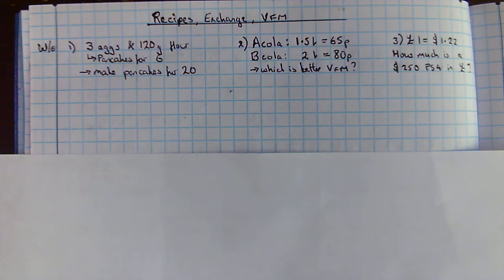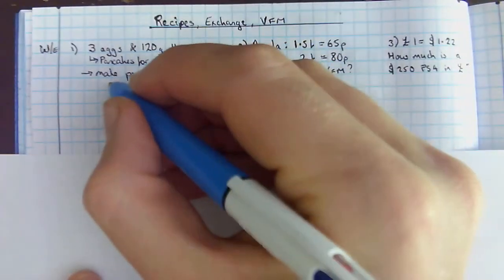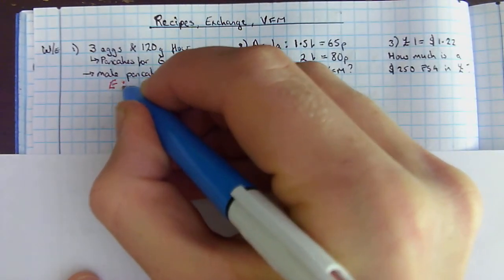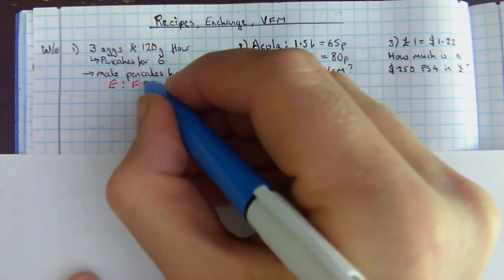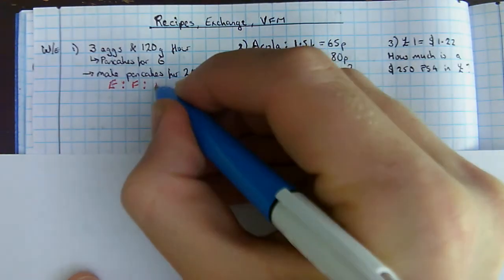Three eggs and 120 grams of flour makes pancakes for six people. The question is to make pancakes for 20. So the first thing to do is set it out as a ratio. I'm going to write E for eggs, F for flour, P for people.